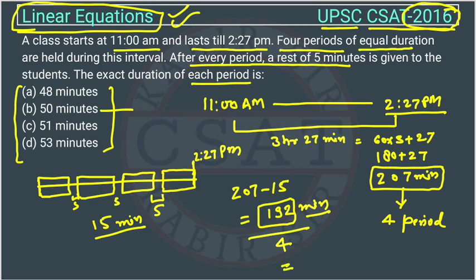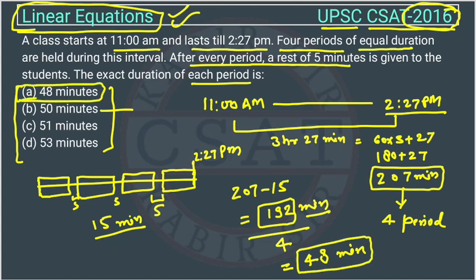When we divide 192 by 4: 4 × 4 is 16, so 3 is remaining — 32, and 4 × 8 is 32. So 48 minutes. Every period will be of 48 minutes. The answer is option A. This was an easy question, but we just need to understand. We have to make an equation on the basis of the information given and we will get the answer.